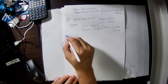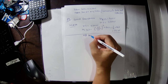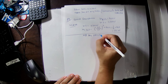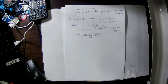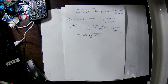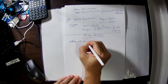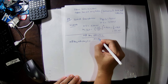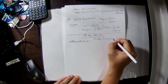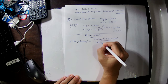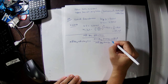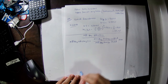We can also calculate all-day efficiency. Normally efficiency equals output power divided by input power. But for all-day efficiency, we calculate total energy output divided by total energy input, multiplied by 100. This is the way we calculate all-day efficiency.